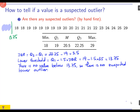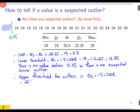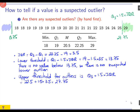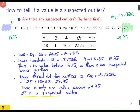We now do the same thing for the upper outliers. The upper threshold is the third quartile plus 1.5 times the IQR: 22.5 plus 1.5 times 3.5, which is 27.75. Anything above that would be considered a suspected outlier. So we found one — 29 is a suspected upper outlier, and there is no suspected lower outlier.